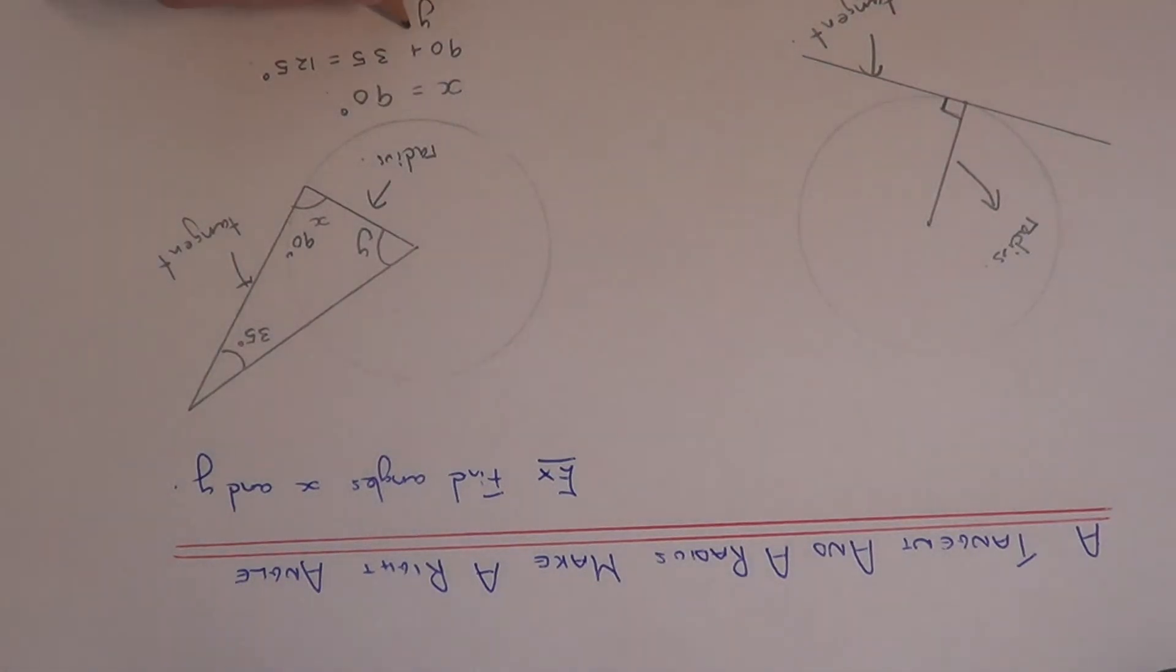So if we subtract this from 180, this will give us angle y. And that will come out as 55 degrees.